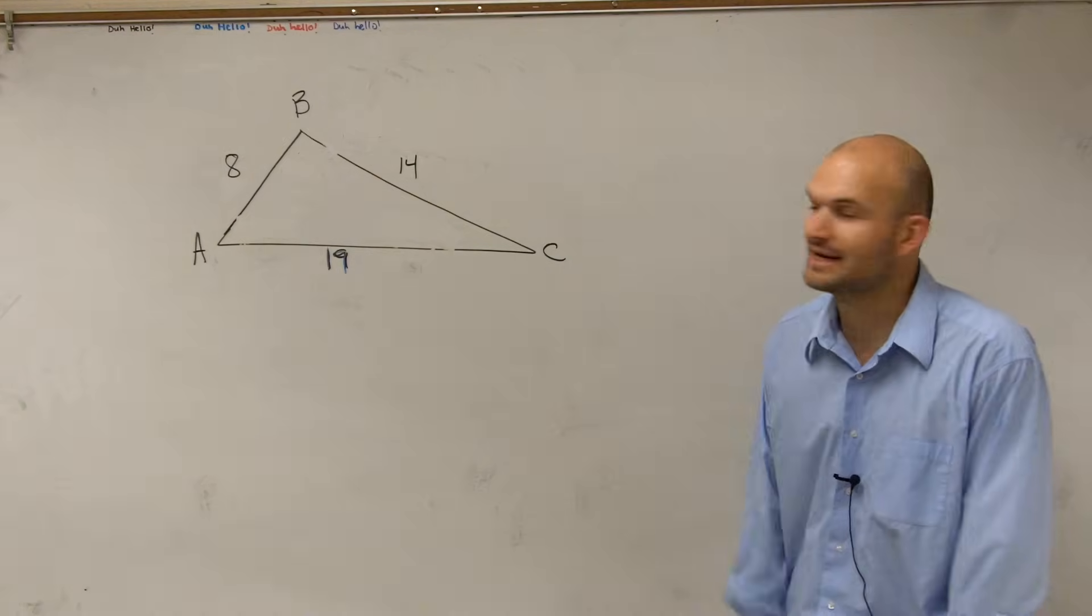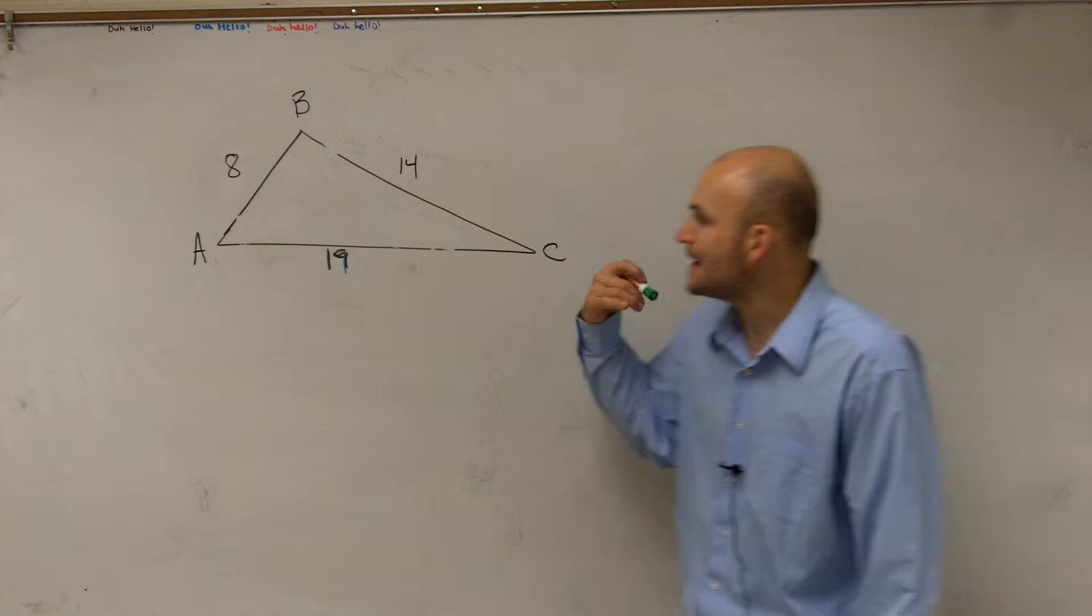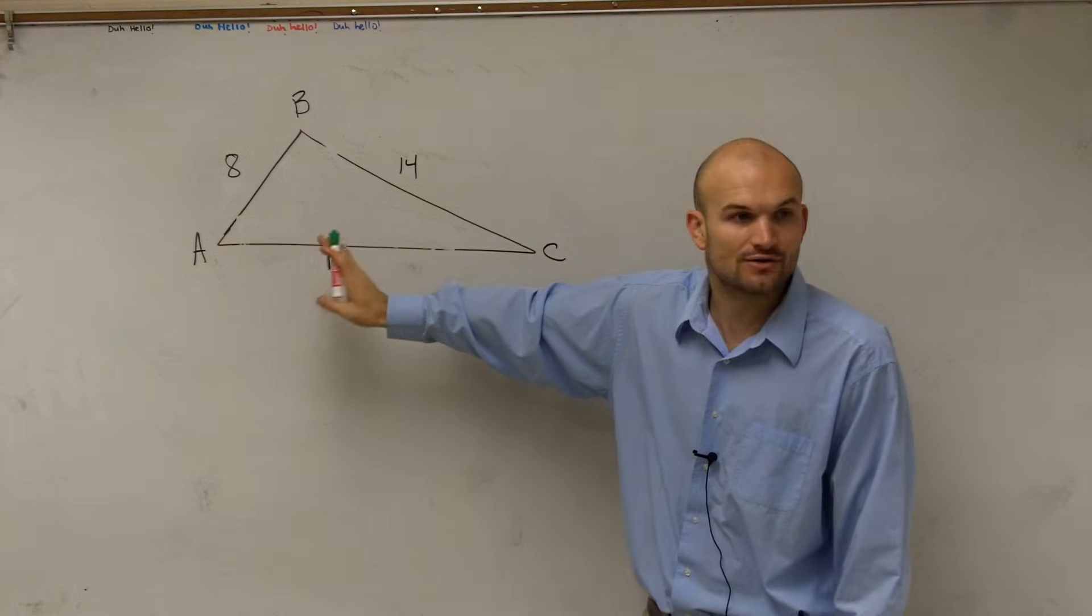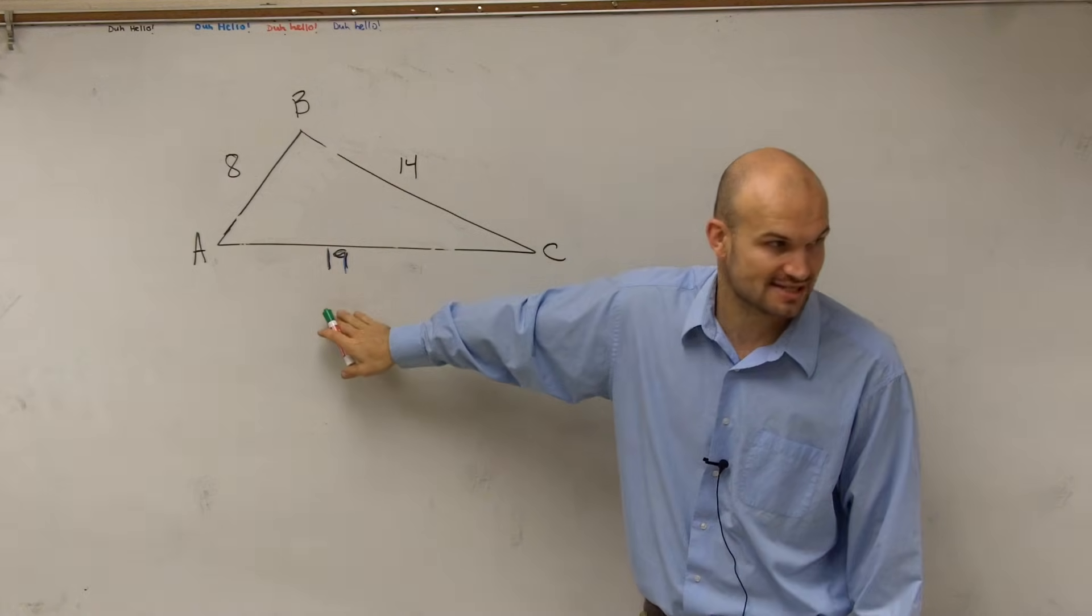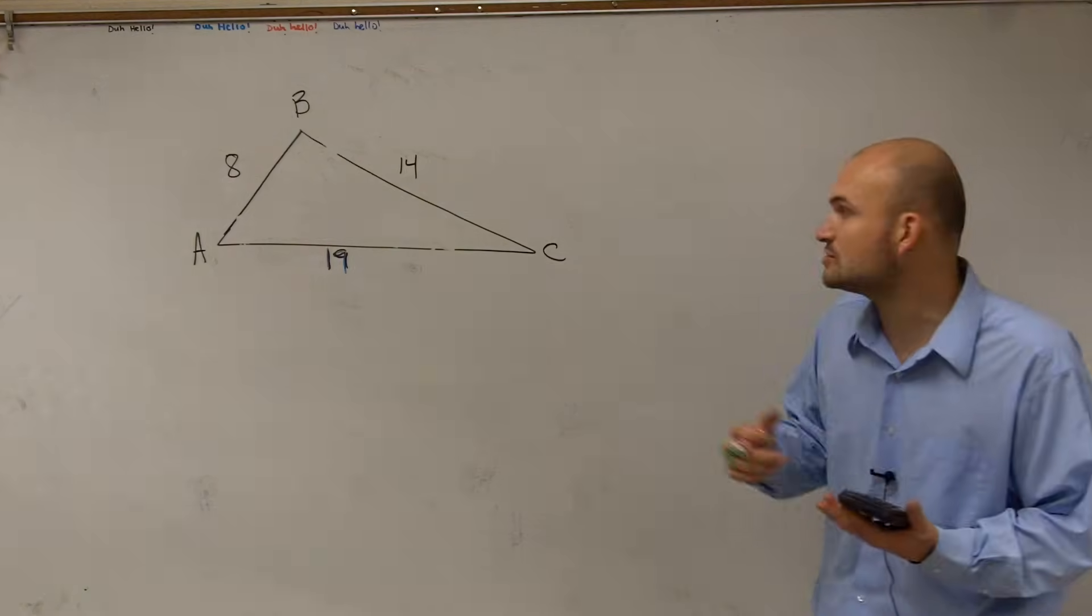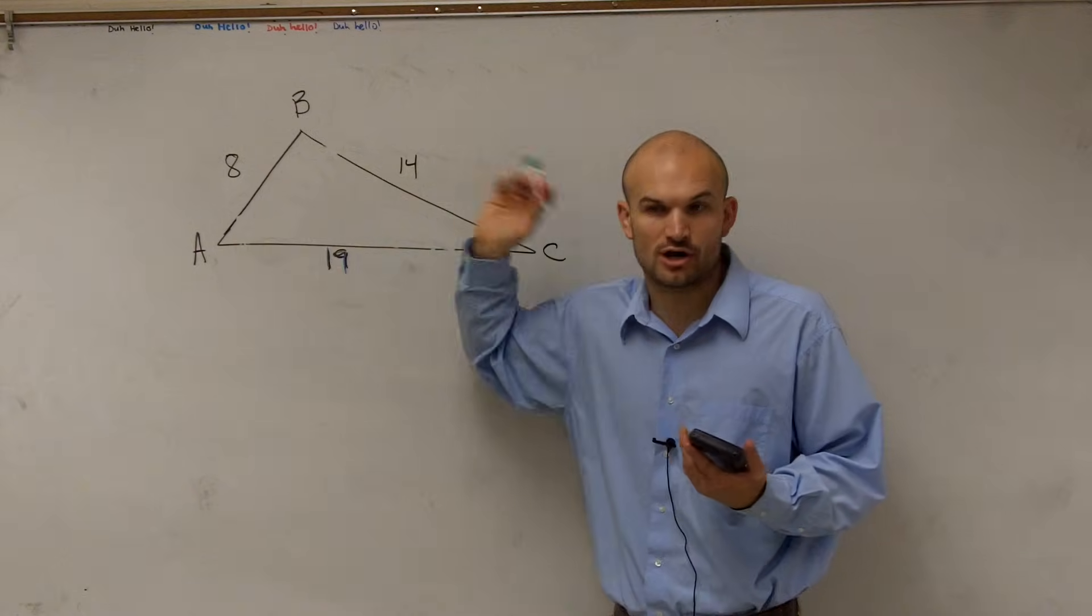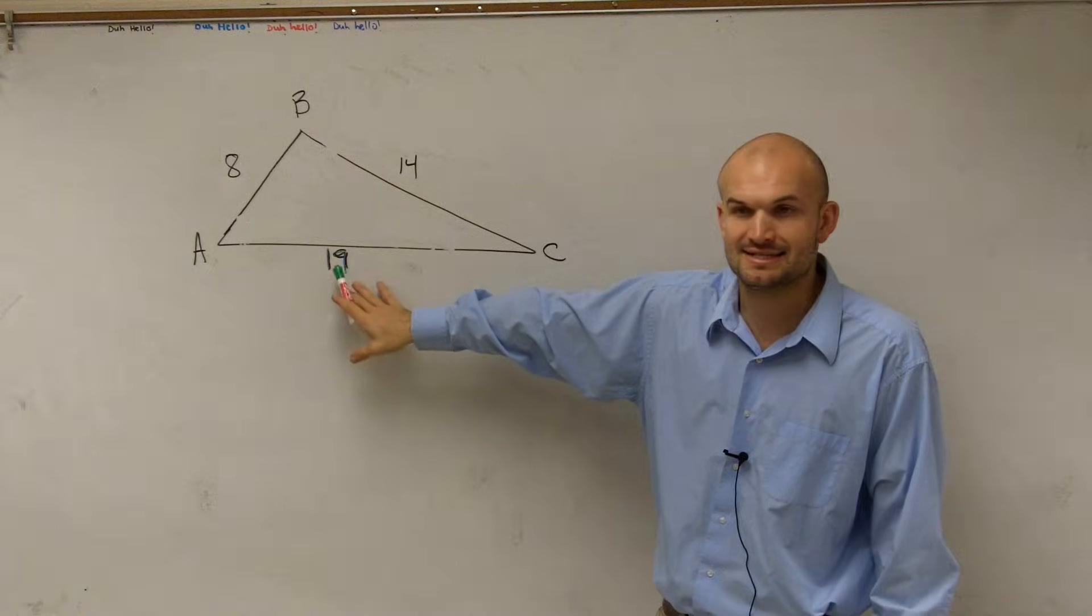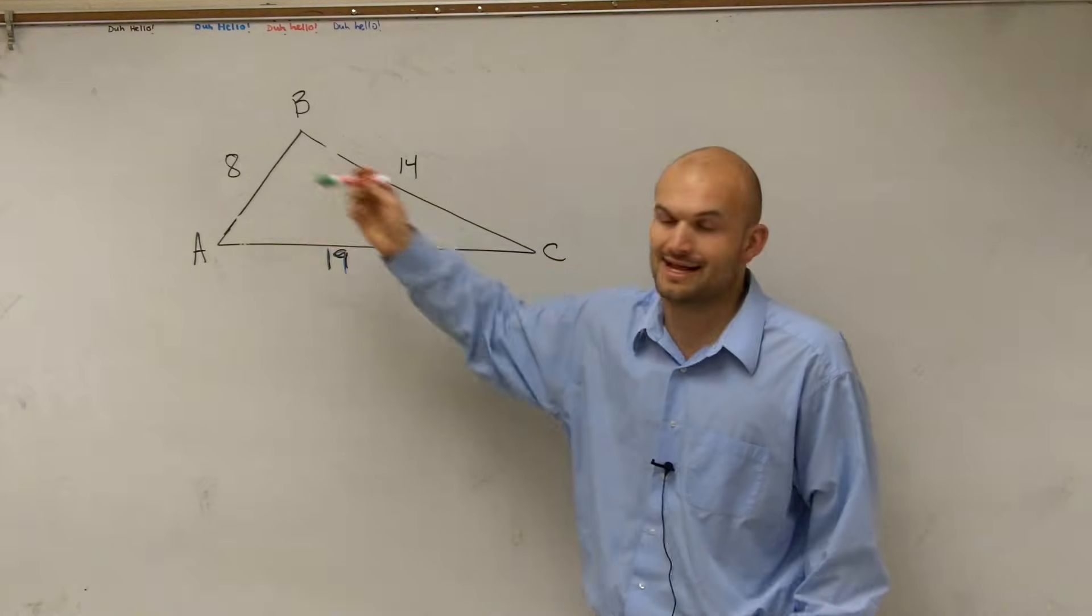So we need to pick an angle that we want to find first. And the best way to use this, the best angle to choose first, is the angle that is across from the longest side. Because knowing what that angle is, if it's going to be acute or obtuse, will help us then determine what our other two angles are. So we notice that the largest, longest side is 19. Therefore, I'm going to want to find angle B first.